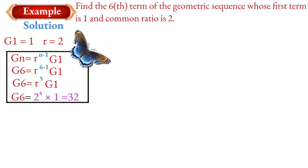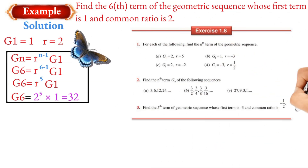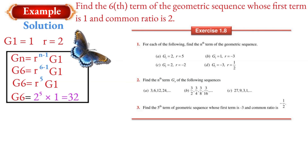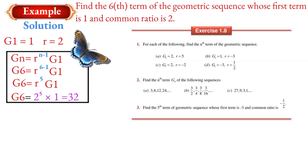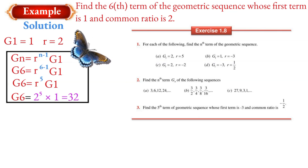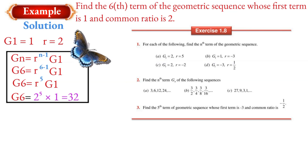Exercise: for each of the following, find the nth term of the geometric sequence and find the nth term of the given sequence. The first example has r equal to 1 and the second example has n equal to 2.